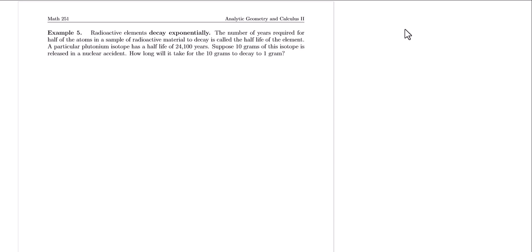This problem begins by telling us that radioactive elements decay exponentially. So whatever amount we have — I'll keep using p — this is telling us that dp/dt equals k times p. The problem states that the number of years required for half of the atoms in a sample of radioactive material to decay is called the half-life of the element.